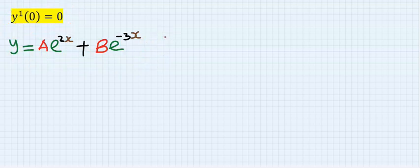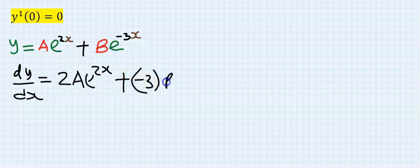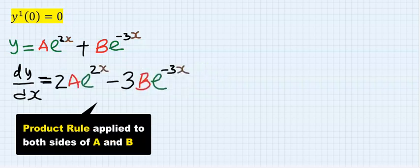If we differentiate this, you're going to have that dy over dx is equal to, differentiating this, you're going to have 2a exponential 2x plus, this will give you minus 3b exponential minus 3x.